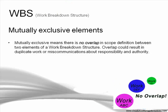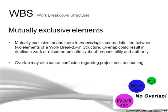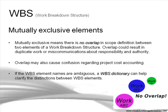Mutually exclusive elements: this rule basically means that there is no overlap in the scope definition between two elements of a work breakdown structure. Overlap could result in duplicate work or miscommunication about responsibility or authority on the project. Overlap also causes confusion regarding project cost accounting. If the WBS element names are ambiguous, you can use a work breakdown structure dictionary to help clarify the distinctions between the work breakdown structure elements.